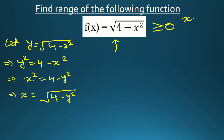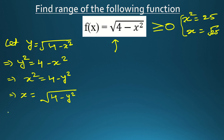I have explained before that x² = 25 and x = √25 are not the same equations — try to understand the difference and write it in the comments. Now, x = √(4 − y²) will not be real if 4 − y² is negative, because a square root of a negative number is not a real number. So we need 4 − y² ≥ 0.